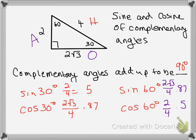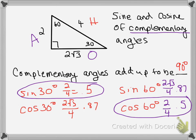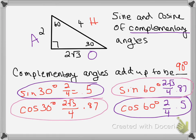What do you notice about the relationships between sine and cosine of complementary angles? Sine of 30° equals cosine of 60° — they're the same. And cosine of 30° equals sine of 60° — they're the same too. This happens because when you change to the complementary angle, the opposite and adjacent swap, making sine of 30° equal to cosine of 60°. Let's see if this holds true for all triangles.